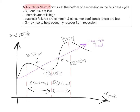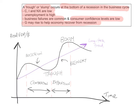A trough or slump occurs at the bottom of a recession in the business cycle. During a slump, consumption spending, investment spending, and net exports are low. Unemployment is very high, business failures are common, and consumer confidence levels are very low. The government may increase spending to help the economy recover — even though C, I, and net exports are low, there's often an increase in G to lift the economy out of recession. This is a period of contraction in economic activity.